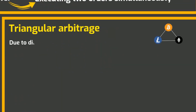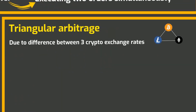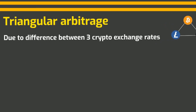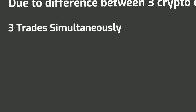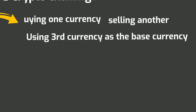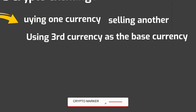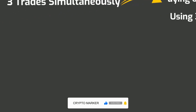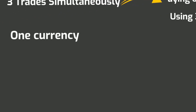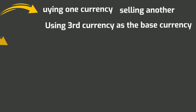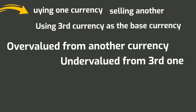Triangular arbitrage occurs due to the difference between three cryptocurrencies when the currency exchange rates do not match exactly. The trader executes three trades simultaneously, buying one currency and selling another, using the third currency as the base currency. This situation occurs when one currency is overvalued relative to another currency and undervalued relative to the third one.